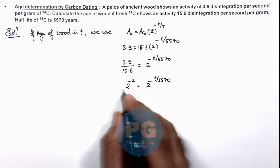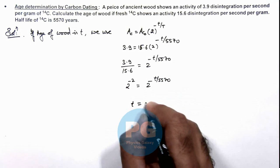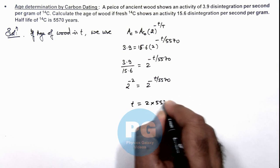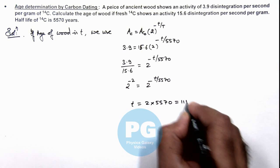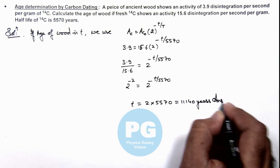So this gives us t is equal to 2 multiplied by 5570 which is 11140, and that is a result of this problem.